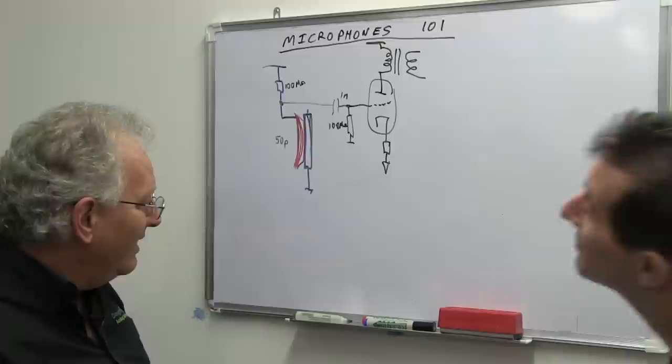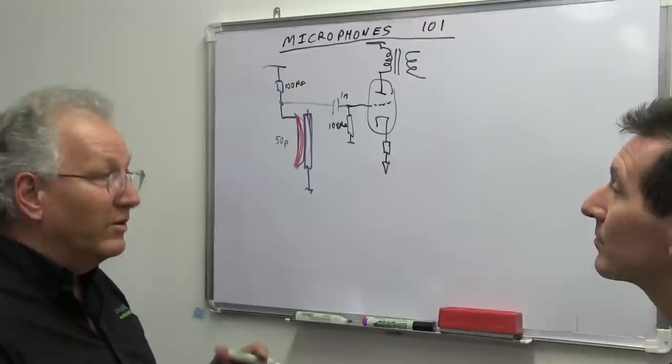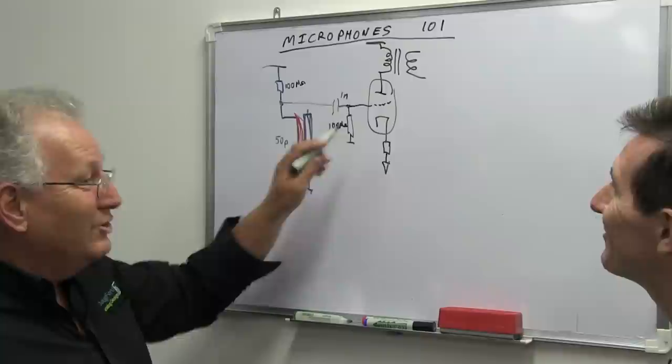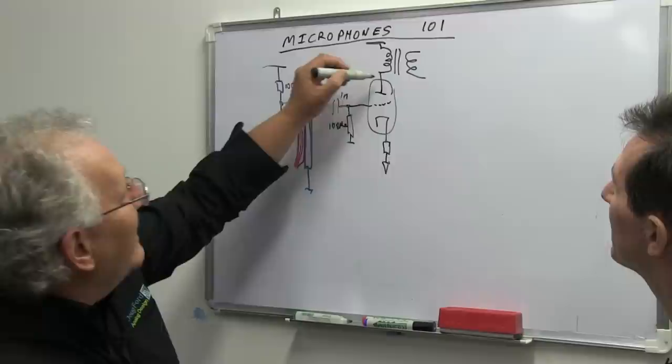I think that this might be an anecdote going back to maybe the 60s or 70s, when Brüel & Kjær decided to go solid state instead of valve, they discovered that they were having all kinds of problems in their measurement mics with humidity buildup. Because they'd taken out the tube. So they actually had to put heater resistors in there. They put a resistive heater.